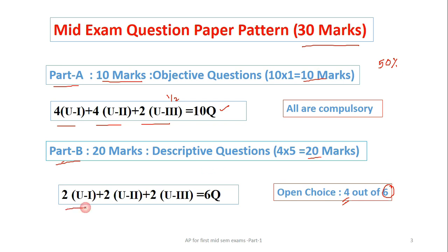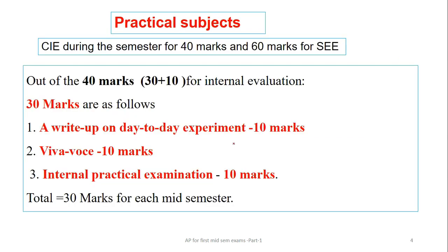From first unit we will get 2 questions, from second unit we will get 2 questions and third unit half part, we will get 2 questions, so total 6 questions will be given. It is an open choice, any 4 we can answer.